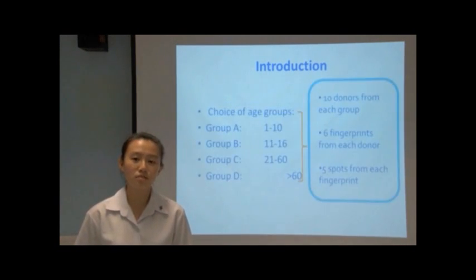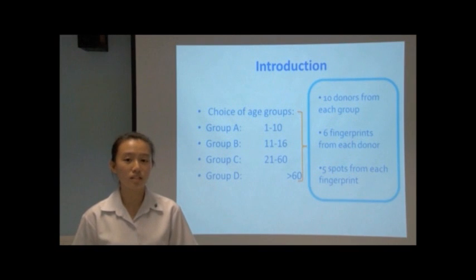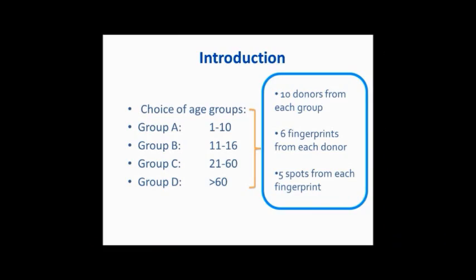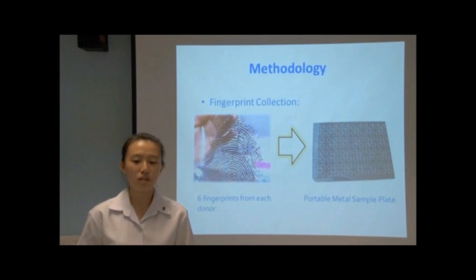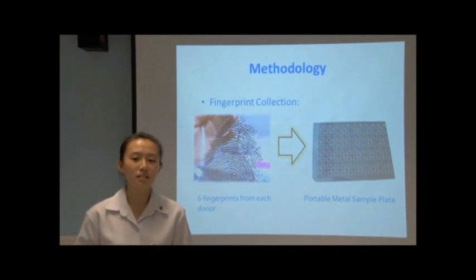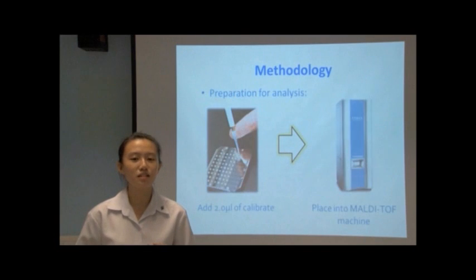After doing much research, we categorised the donors into 4 different age groups with 10 donors in each age group. Six fingerprints were collected from each donor and 5 spots from each fingerprint were analysed, providing us with a wide range of data. Fingerprints were collected on portable metal sample plates, then calibrated before being placed into the MALDI-TOF-MS machine for analysis.